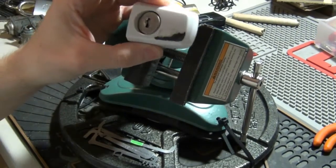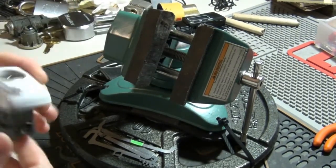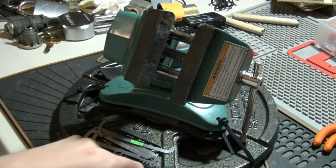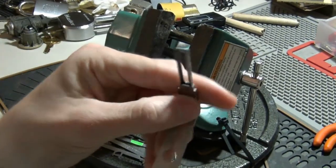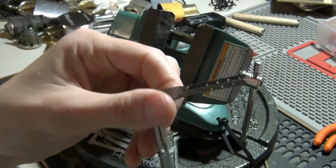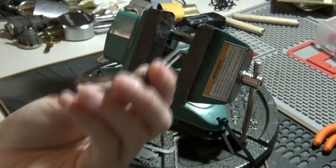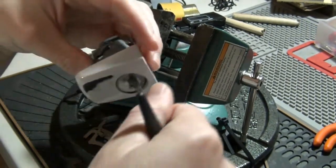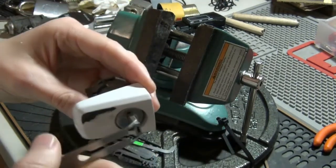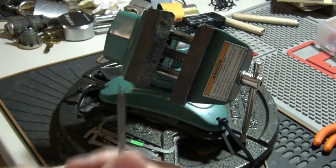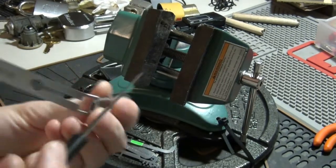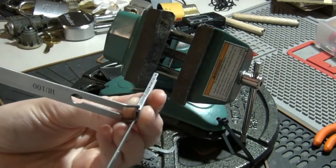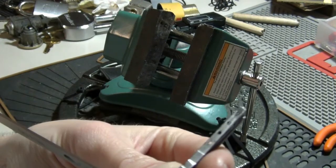If you're not familiar with Lishi tools, basically these are made for different vehicles and they've got a keyway so it actually fits in the lock just like a key would. That's your tensioner, and then it's got the holes cut out where the wafers are in the lock, so the pick goes in.